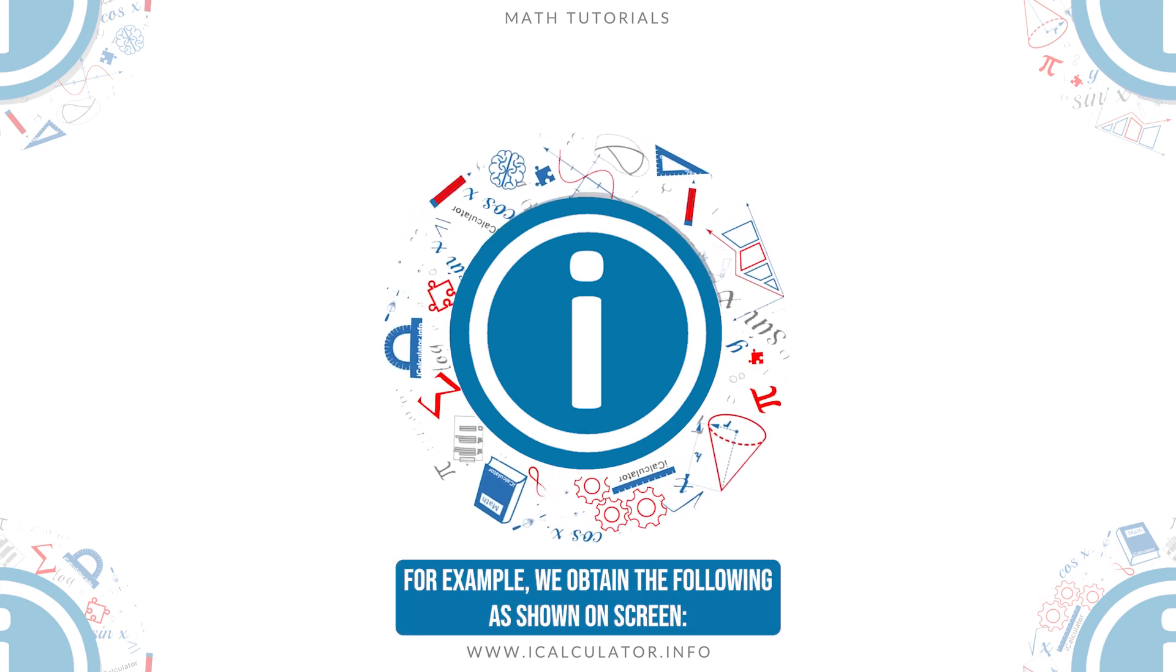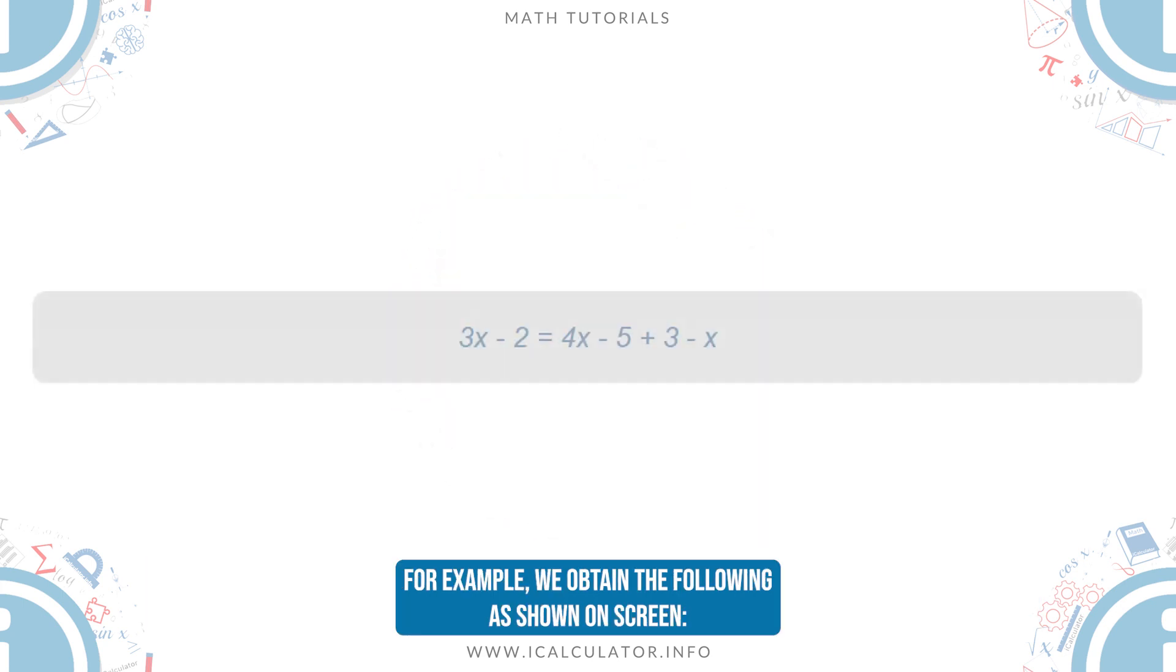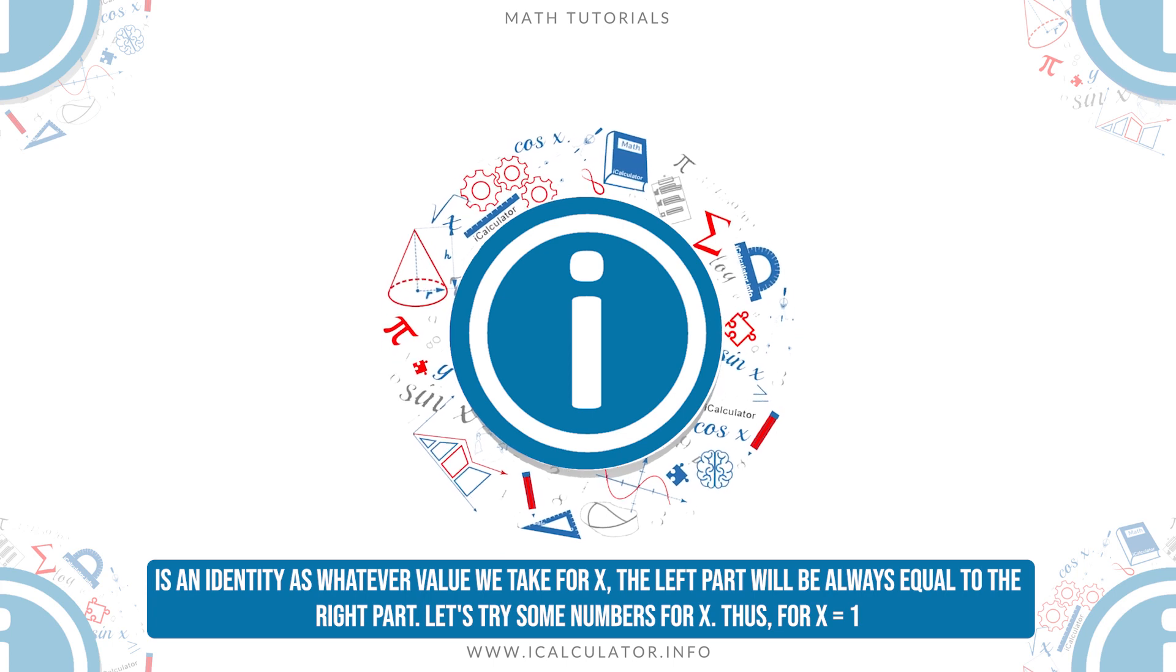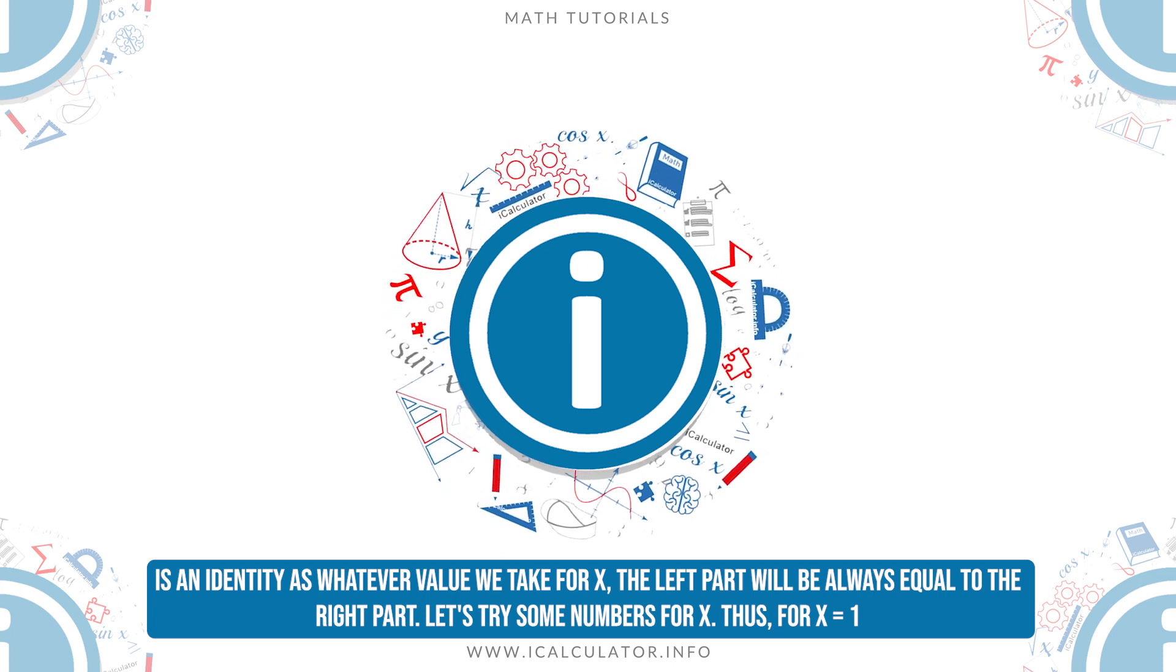For example, we obtain the following as shown on screen. This is an identity as whatever value we take for x, the left part will be always equal to the right part.